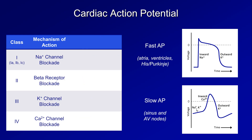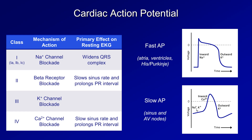Now let's ask what the primary effect on the resting EKG would be from each class. Class 1 drugs slow depolarization of the fast response action potential seen in the atria, ventricles, and His-Purkinje system — the most noticeable EKG effect is widening of the QRS complex, which represents ventricular depolarization. Class 2 and class 4 drugs slow depolarization in the slow response action potential of the sinus and AV nodes, so beta blockers and calcium channel blockers slow the sinus rate and may prolong the PR interval, representing physiologic AV nodal delay. Class 3 drugs prolong the action potential and delay repolarization — since T waves represent ventricular repolarization, potassium channel blockers prolong the QT interval.